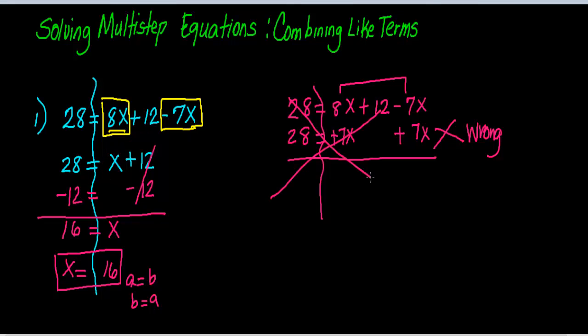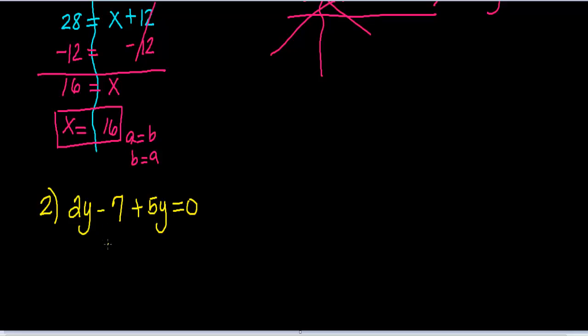Here's example 2. Again, whenever you see an equation, always try and draw a river down the equal sign just so that you're sure what one side is and what the other side is. Now notice on the left side, I have two terms that I can join together. I have 2y and I have plus 5y. So these are like terms.